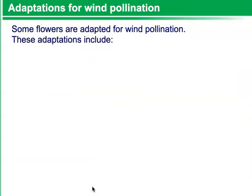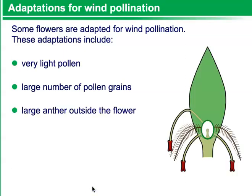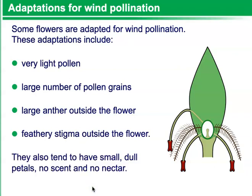Adaptations for wind pollination. Some flowers are adapted for wind pollination. These adaptations include very light pollen, a large number of pollen grains, a large anther outside of the flower, and a feathery stigma outside the flower. They also tend to have small, dull petals, no scent, and no nectar. Bright colored petals, along with scent and nectar, would be used in order to cause insects to pollinate plants.